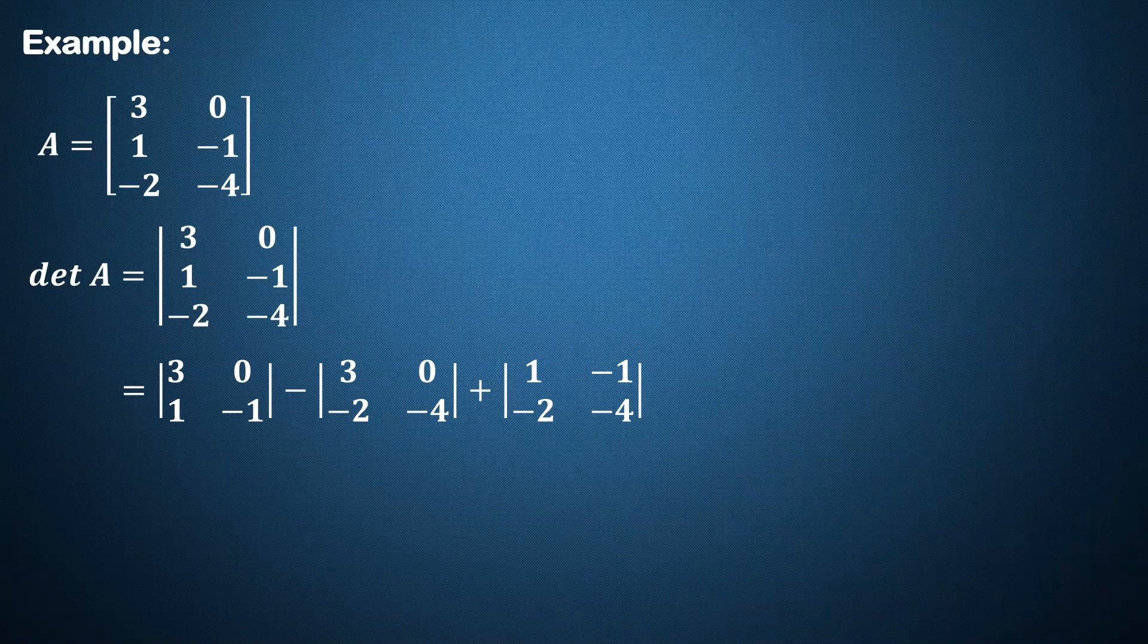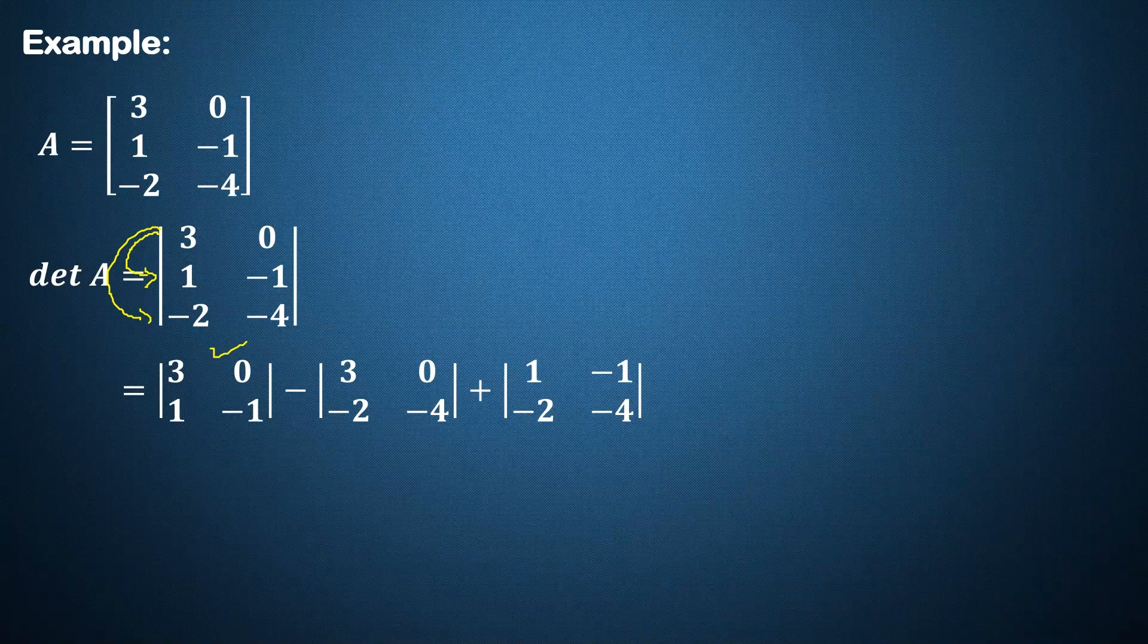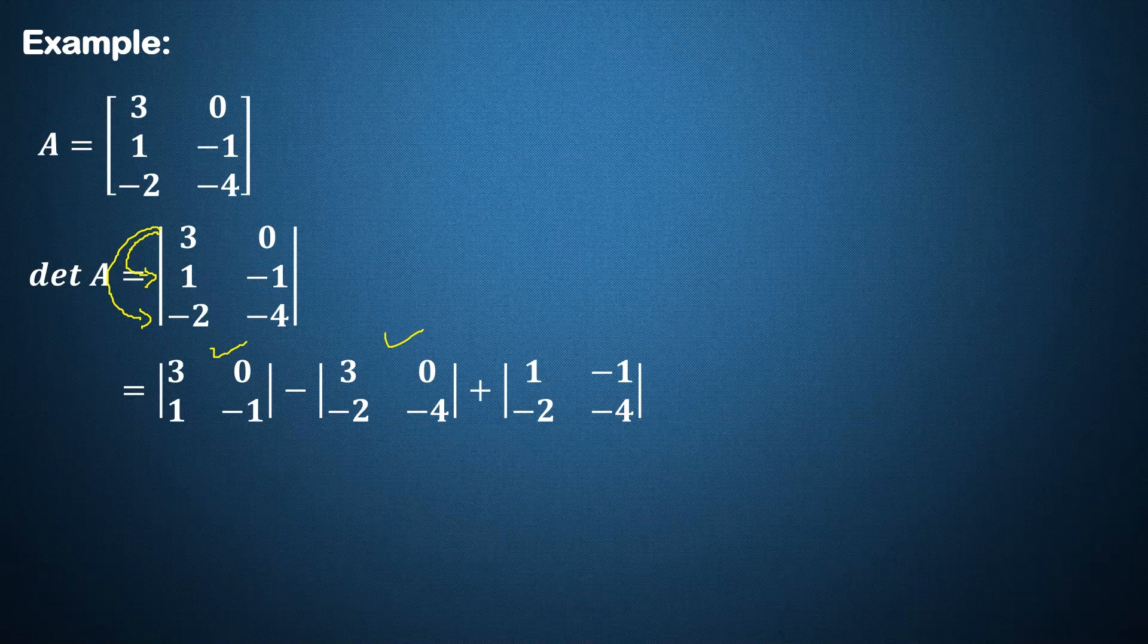Here row 1 is associated with row 2 and we get a 2 by 2 determinant. Then row 1 is associated with row 3 and we get another 2 by 2 determinant. Then row 2 is associated with row 3 and we get another 2 by 2 determinant.